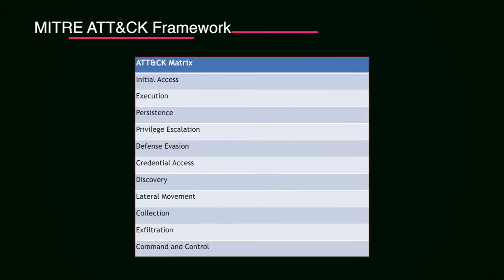The ATT&CK matrix covers initial access — how the attacker got initial access into the target network — then execution, persistence, privilege escalation, defense evasion, credential access, discovery, lateral movement to critical devices, collection and exfiltration of data, and setup of command and control. The ATT&CK matrix can be used for investigating incidents and preparing reports, as the methods and techniques of attackers are listed against the initial execution process.